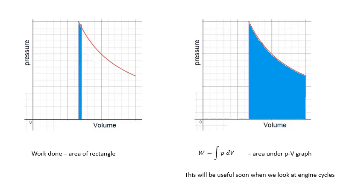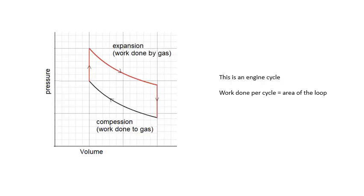So the work done, either for a gas expanding or for compressing a gas - the work done is the area under the curve on a pV graph. Work done is the area under the curve, and that's going to be very useful later on when we look at engine cycles, for example.